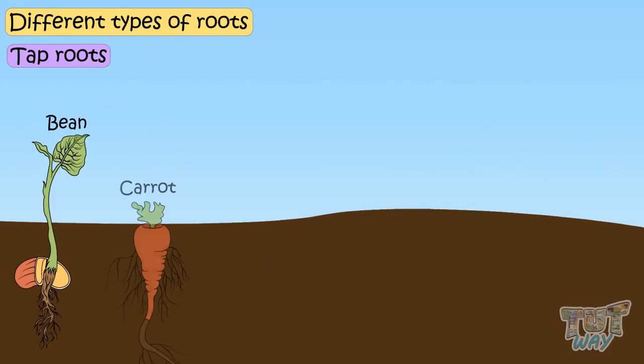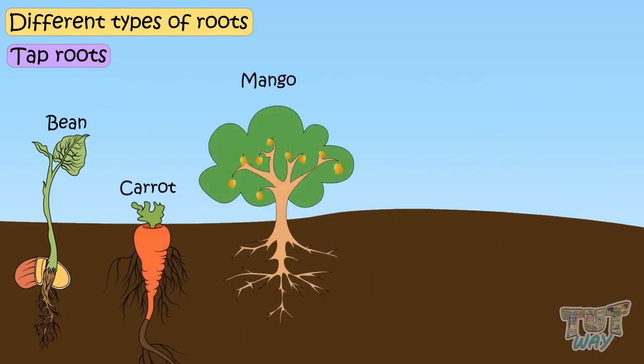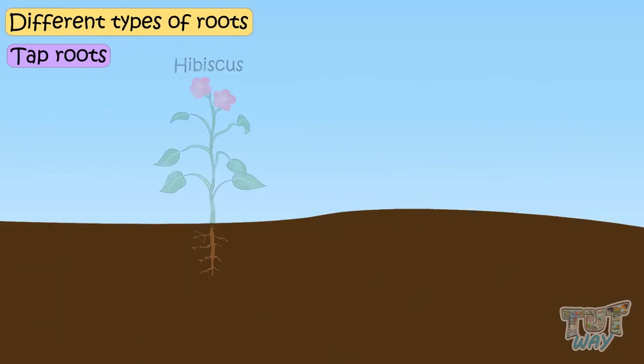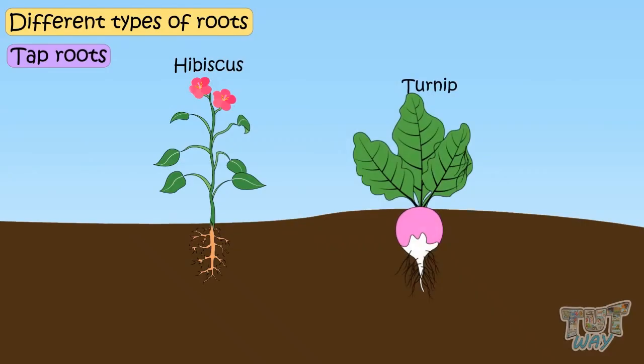Beans, carrots, mango, radish, rose, hibiscus and turnips are the plants that have tap roots.